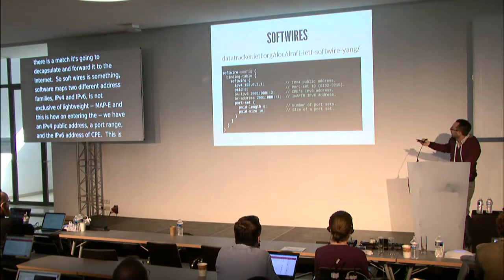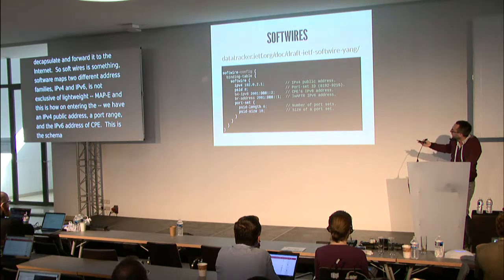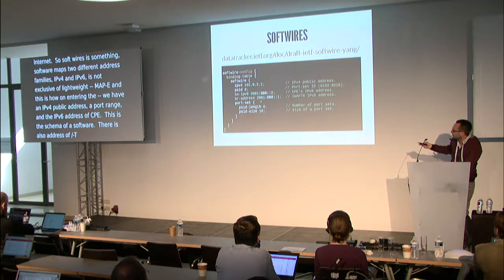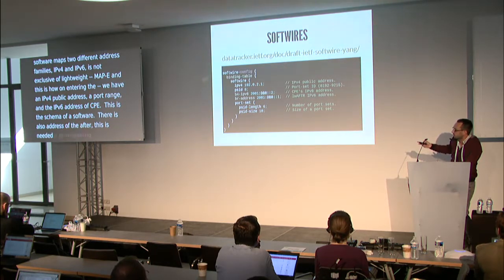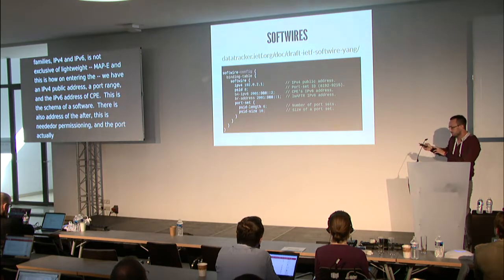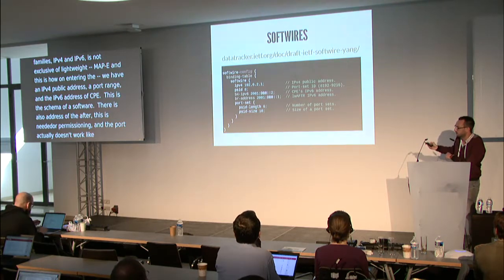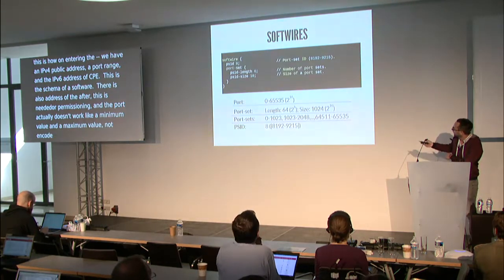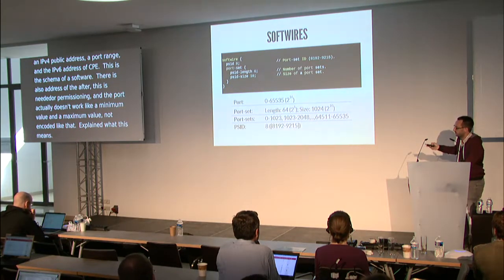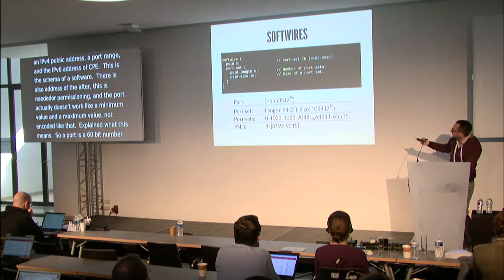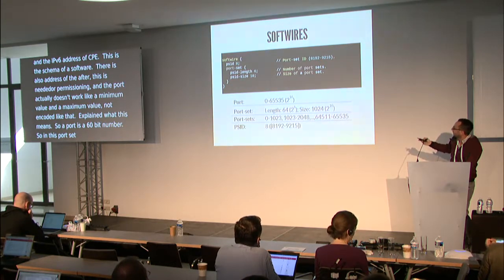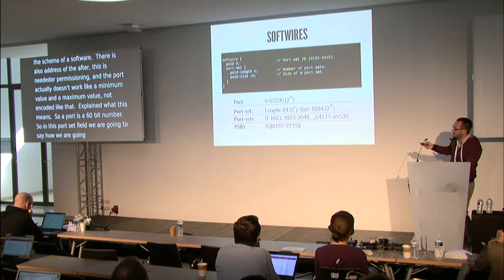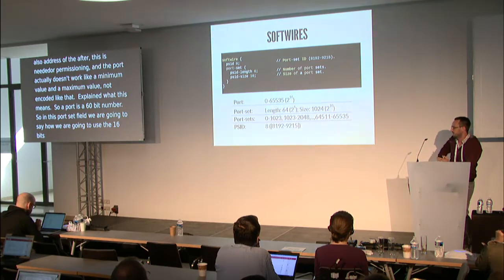This is the YANG schema of a softwire — it has the three fields I mentioned: the IPv4 address, port range, and CPE IPv6 address. There is also the address of the AFTR, needed for provisioning. The port is not encoded as a minimum and maximum value — instead, a port is a 16-bit number, and the port set field specifies how to use those 16 bits to define the size of the port set, like 1,024.